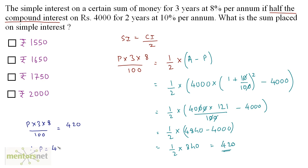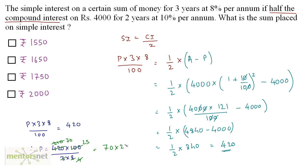So we have P times 3 times 8 upon 100 equals 420. Therefore P equals 420 times 100 divided by 24. Simplifying: 420 divided by 2 is 210, 8 divided by 2 is 4, 4 times 25 is 100, and 3 times 70 is 210. So this equals 70 times 25, which is 1750. So the answer is Rs.1750. Option C.